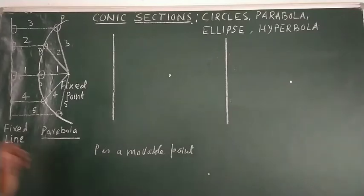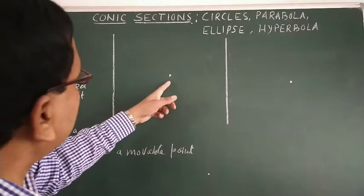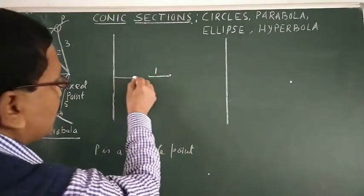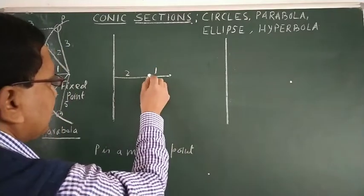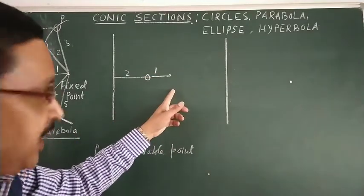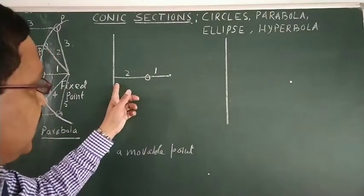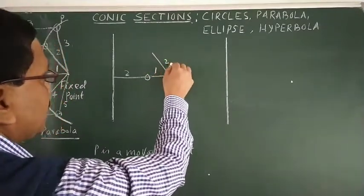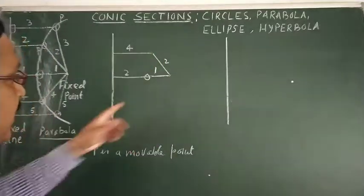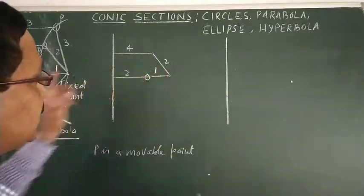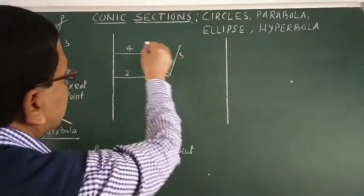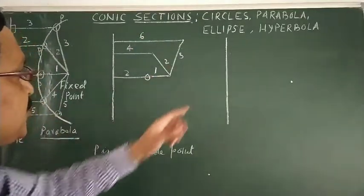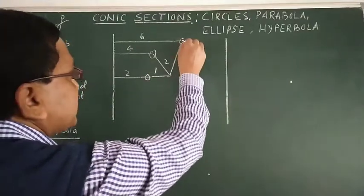Now again, a different movement: suppose this distance is one and this is two — nearer to the point and away from the line. Let this distance be two, this is four. Suppose this length is three, then this will be six — again the ratio is one to two. So these are the positions of the moving point forming an ellipse.